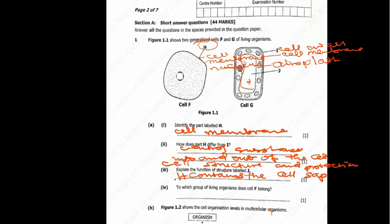Question 1a4 says to which group of living organisms does cell F belong. Cell F is the first cell. This cell belongs to the animal organisms — animalia.